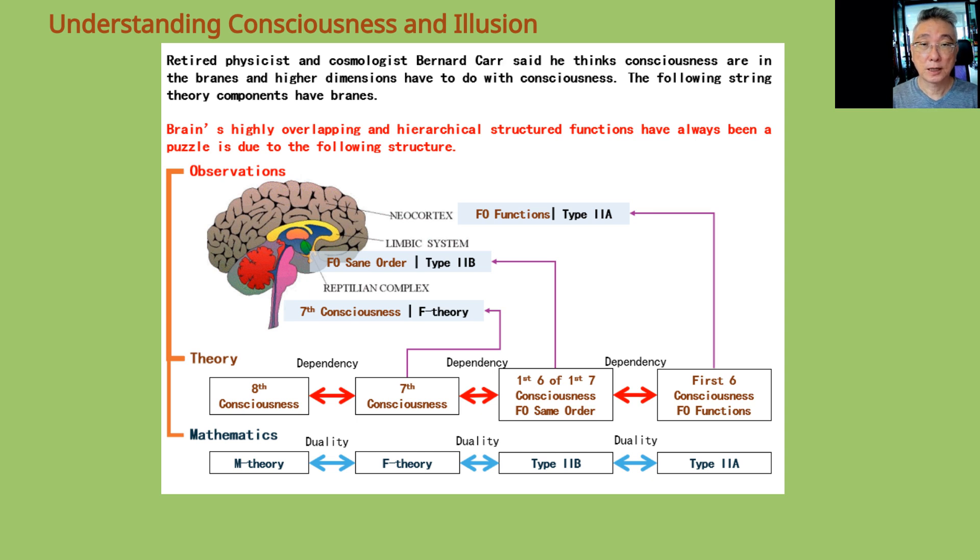We shall see in later episodes how the reptilian complex is related to seventh consciousness and F-theory, which is always inward-looking, and how limbic system and neocortex are related to fruit of same order and fruit of functions respectively. This is how theory, mathematics, and observations can all come together.